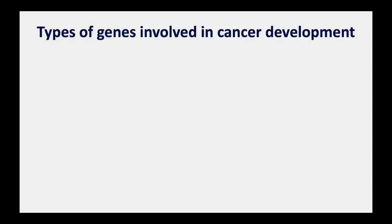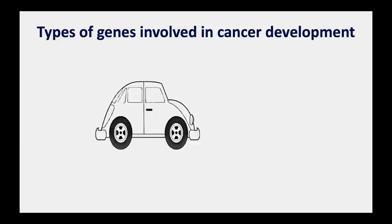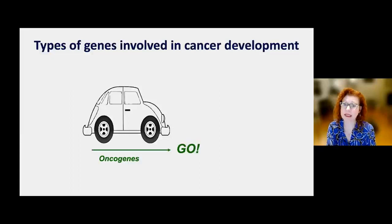Consider the analogy of a car as a cell. Here's a VW Bug representing our normal cell. Normally we have a gas pedal and we have brakes, and we need both to drive safely—we need the gas to move forward and the brakes to stop, speed up, or slow down as needed. When both are working properly, we're just fine.